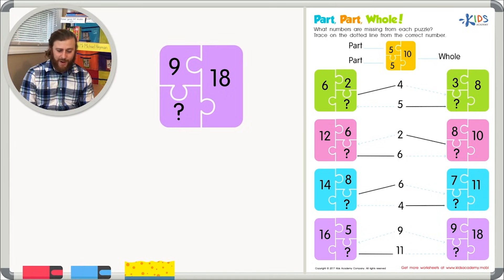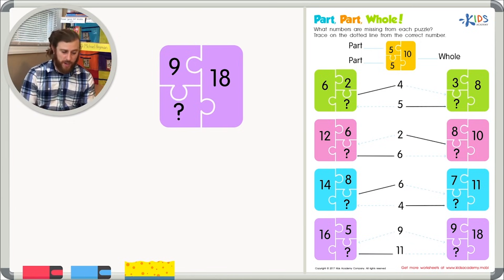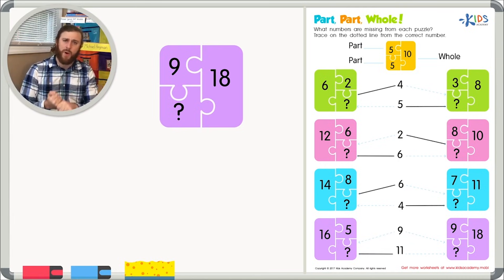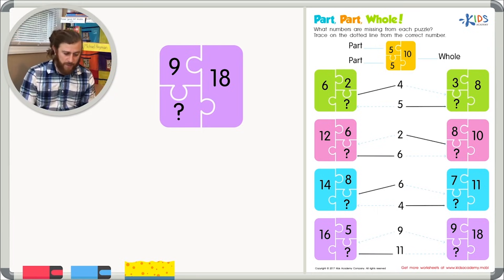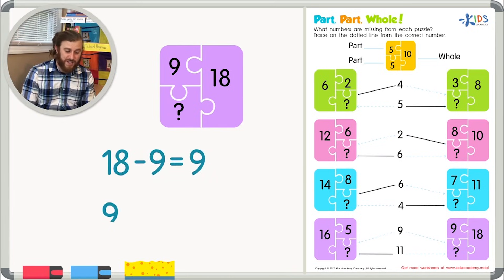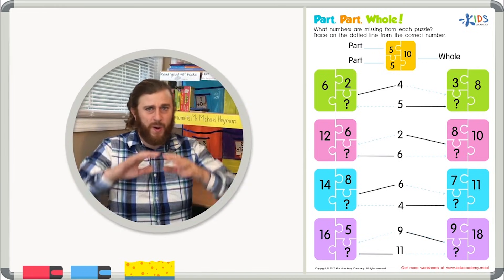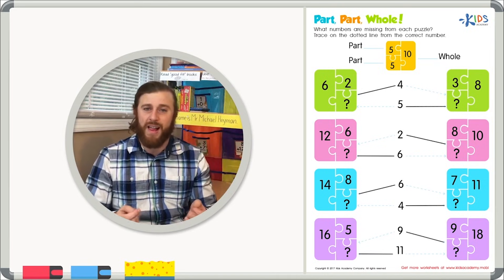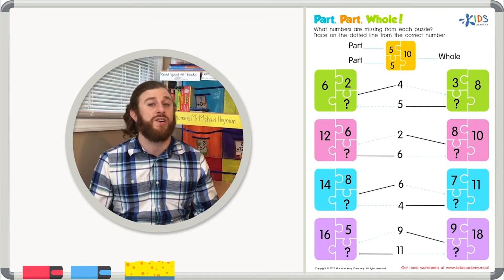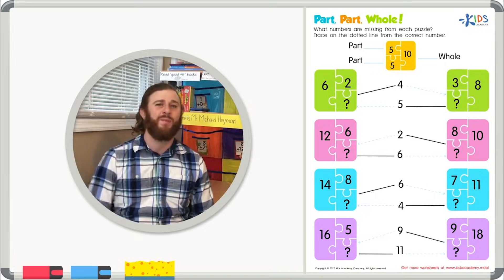Our last number: we have 18 as our whole number and nine as one of our parts. We'll use subtraction one final time — we're taking our whole number and taking the one part that we know away from it, so we'll be left with the missing part. 18 minus nine is a doubles fact — that equals nine. And when we add nine plus nine, I know that does equal 18. So our missing number is nine. Remember boys and girls: when you have a part, part, whole problem and you have the whole number and one of the parts, you can use subtraction to figure out the correct answer. Thanks for watching and we'll see you next time.